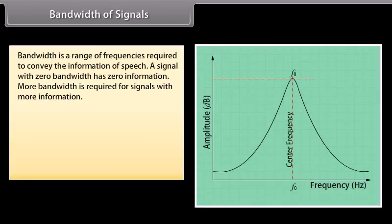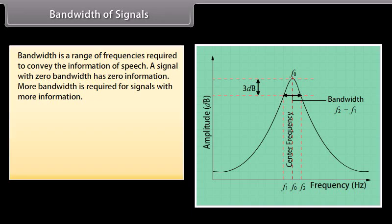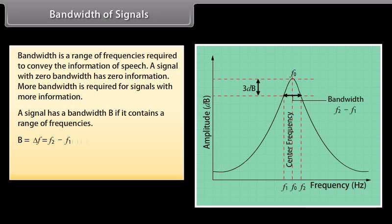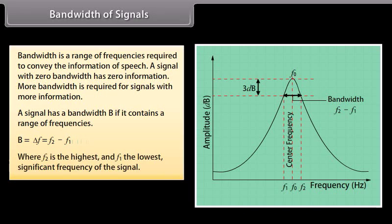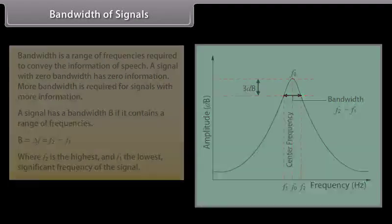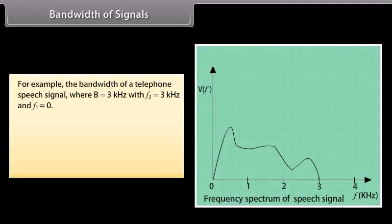Bandwidth of signals: Bandwidth is a range of frequencies required to convey the information of speech. A signal with zero bandwidth has zero information. More bandwidth is required for signals with more information. A signal has a bandwidth B if it contains a range of frequencies: B = ΔF = F2 − F1, where F2 is the highest and F1 is the lowest significant frequency of the signal. For example, the bandwidth of a telephone speech signal is B = 3 kHz, with F2 = 3 kHz and F1 = 0.